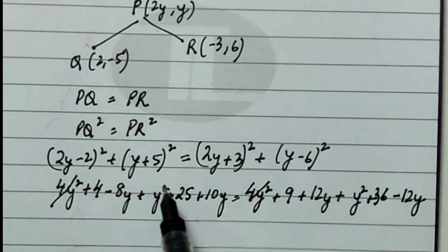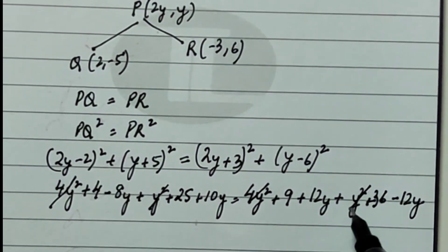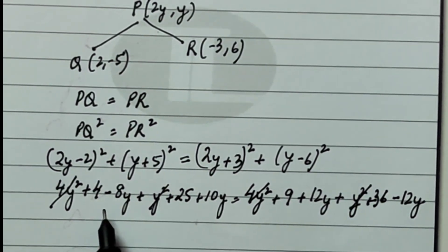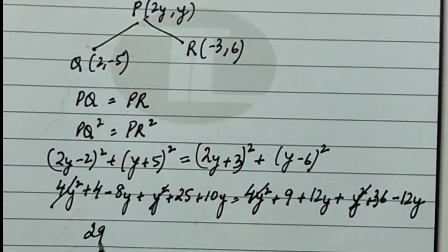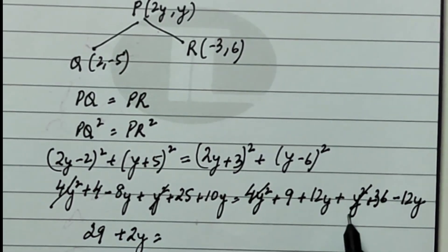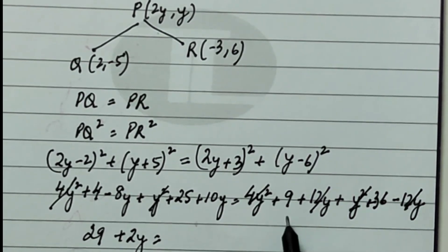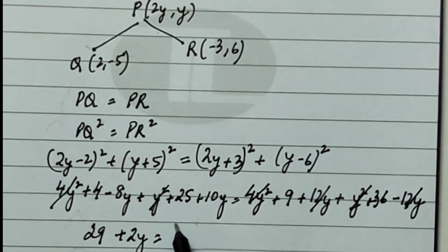4y² and 4y² cancels. y² and y² also cancels. I am left with what? 29 + 2y is equal to 12y and 12y cancels. And it is equal to how much? 45.